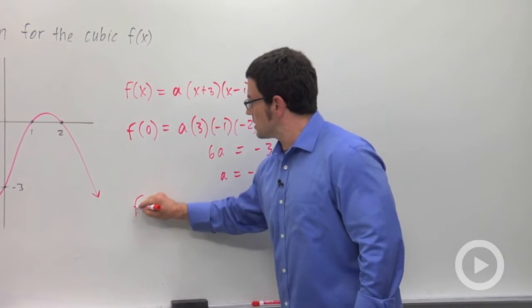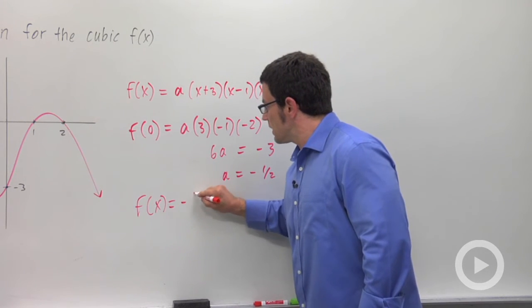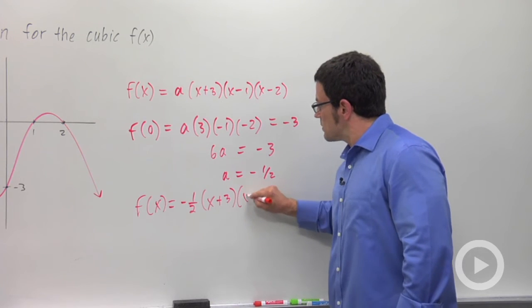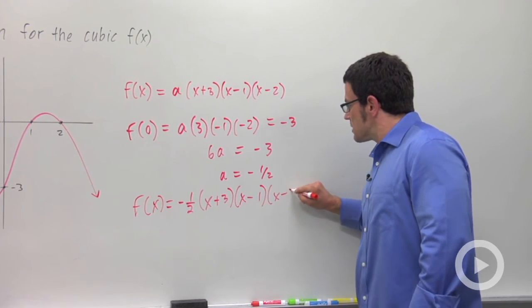So my function is f of x equals negative 1 half x plus 3 x minus 1 x minus 2.